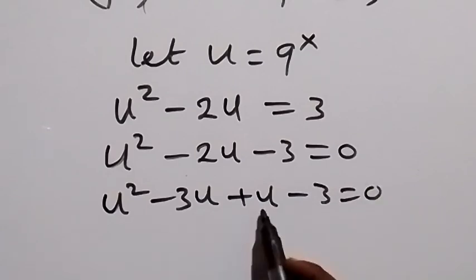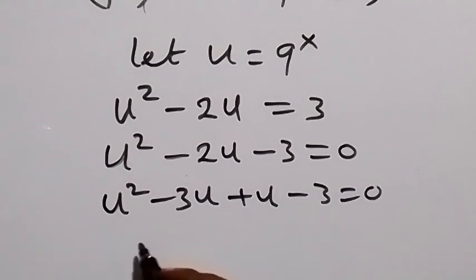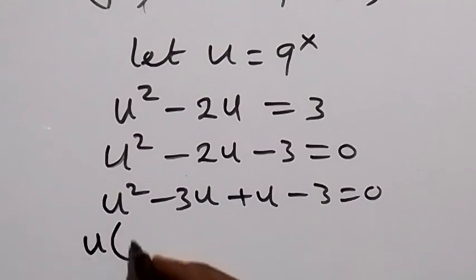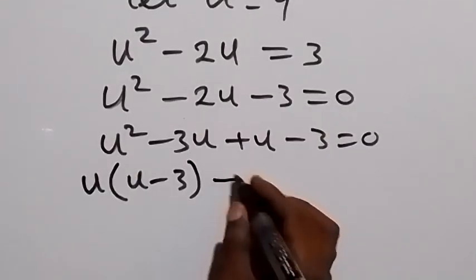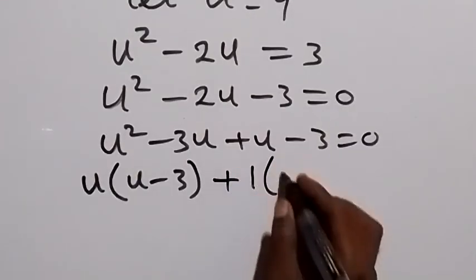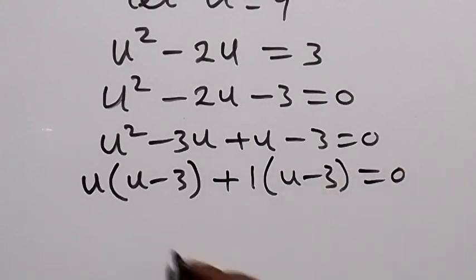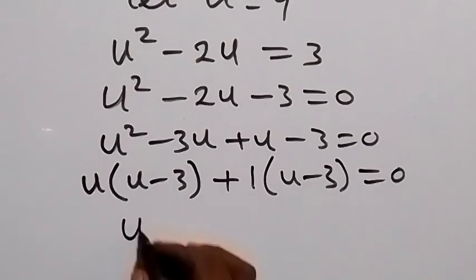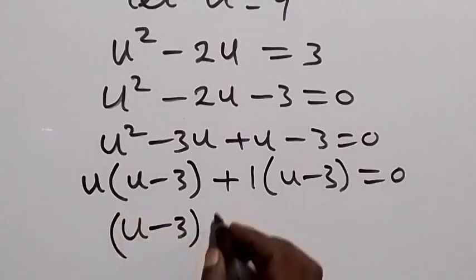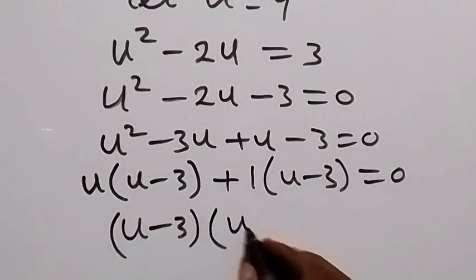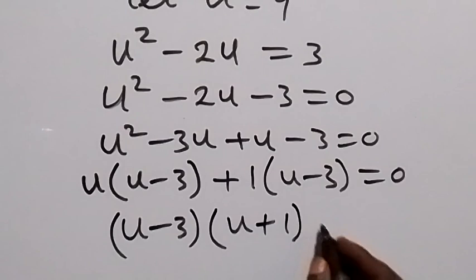From here, minus 3u plus u will give us minus 2u. Then, when we factor what is common and group it into two, what is common in the first group is u, giving us u minus 3. Then, what is common in the second group is 1, giving us u minus 3 as well, equals to 0. Then from here, u minus 3 is common, so when we take it out, we have u minus 3 times u plus 1 equals to 0.